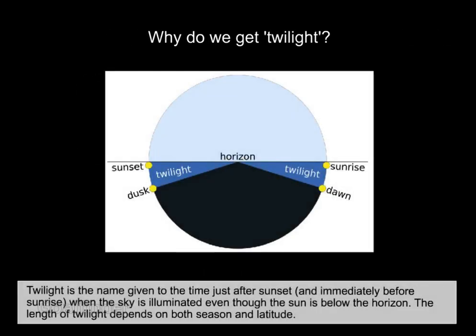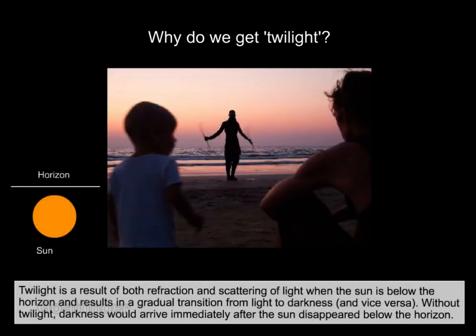Why do we get twilight? Twilight is the name given to the time just after sunset and immediately before sunrise when the sky is illuminated even though the sun is below the horizon. The length of twilight depends on both season and latitude. Twilight is a result of both refraction and scattering of light when the sun is below the horizon, resulting in a gradual transition from light to darkness and vice versa.